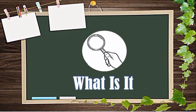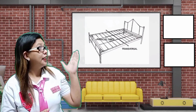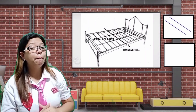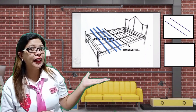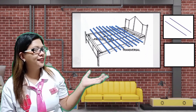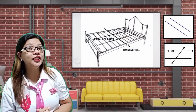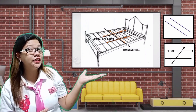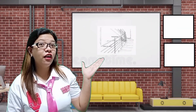I will present to you an illustration of parallel lines and transversal. Here is a bed frame — those are the parallel lines. Here are the parallel lines in the bed frame. And that is the transversal line in the bed frame.